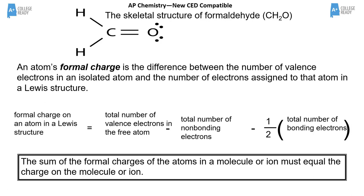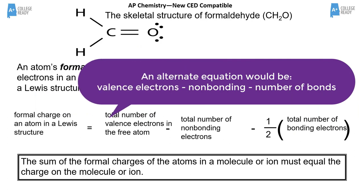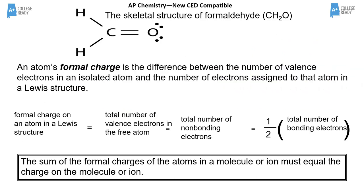The formal charge formula: valence electrons minus non-bonding electrons minus one-half the bonding electrons. For the central carbon with four bonds — four bonds equals eight bonding electrons — the math is 4 (valence) minus 0 (non-bonding) minus 4 (half of 8) equals zero. So formal charge on carbon is zero. Students practice assigning formal charge to figure out which Lewis structure is best.